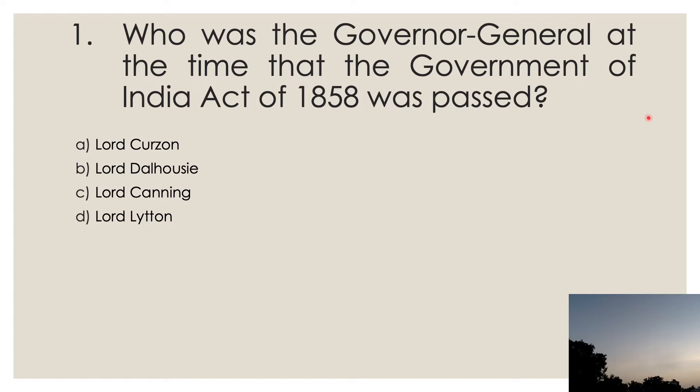Question one: who was the Governor General at the time the Government of India Act of 1858 was passed? The options are Lord Curzon, Lord Dalhousie, Lord Canning, and Lord Lytton. The correct answer is C — Lord Canning. You should know that this act provided for the Governor General to become the Viceroy, so Lord Canning was the first Viceroy of India as well.